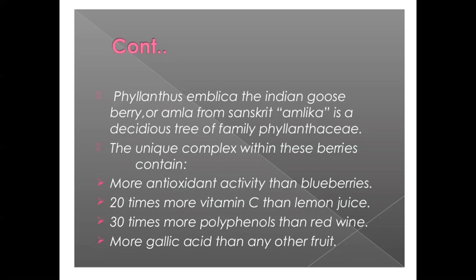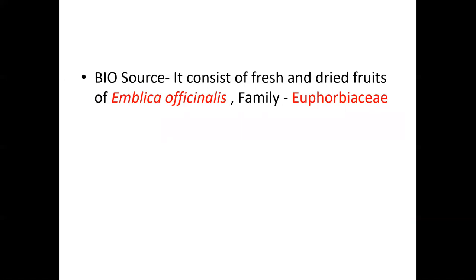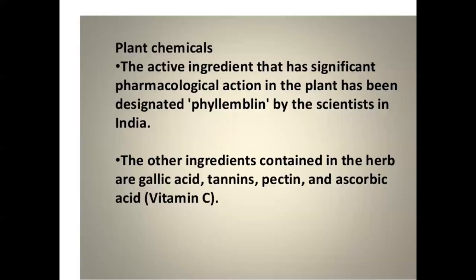The source of amla is dried fruits obtained from Phyllanthus emblica (also called Emblica officinalis), belonging to the Euphorbiaceae family. In Sanskrit it is called amlika. It is a deciduous tree. The berries contain antioxidant activities and 20 times more vitamin C than an orange, and 30 times more polyphenols than red wine. It contains tannins, gallic acid, ellagic acid, pectin, and vitamin C as main constituents.